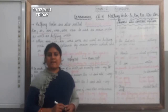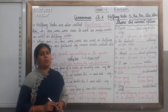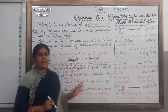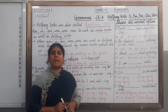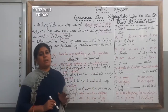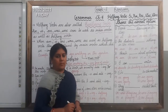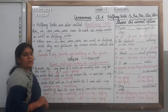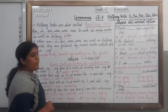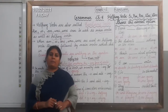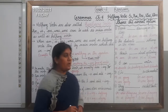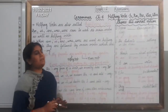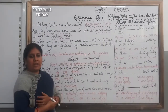In the previous chapter, that is chapter number 7, we have learnt how is, am, are, was, were were used as the main verbs. So in this chapter, I am going to explain you again how is, am, are, was, were are used as helping verbs. They can be used as main verbs also, but today we will learn how they are used as the helping verbs. First of all, you have to remember that another name for helping verb is auxiliary verbs. So remember that we can call them auxiliary verbs also.